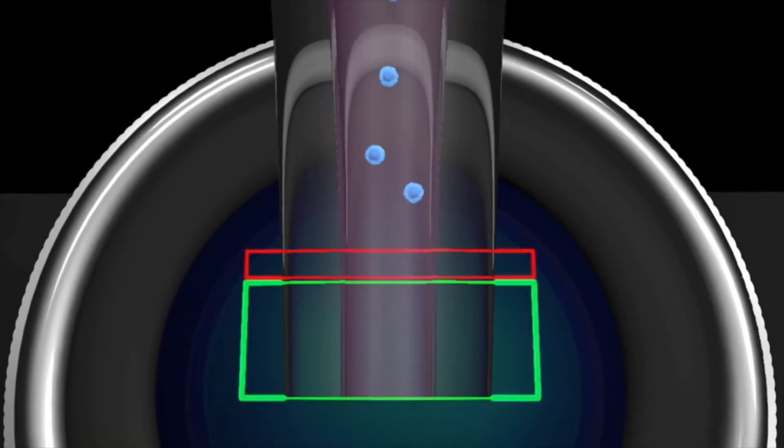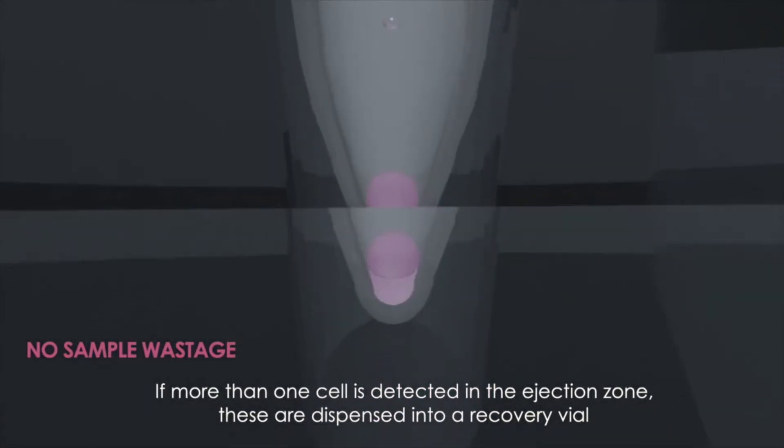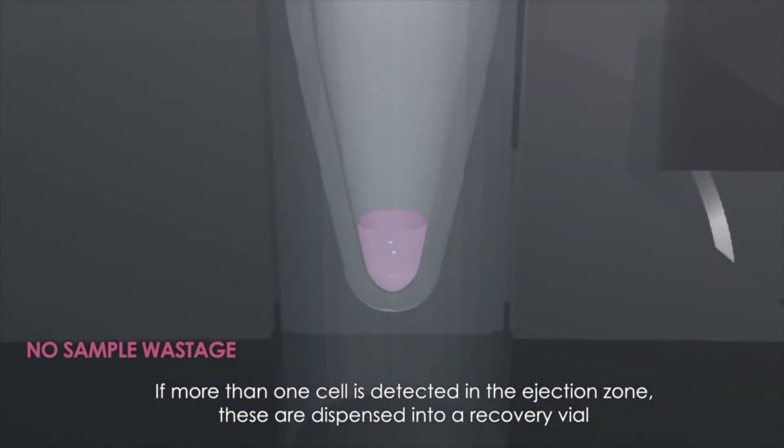Empty droplets, droplets containing multiple cells including cell aggregates, or even debris that do not meet isolation criteria are sent to a recovery tube where they can be recycled or disposed of.